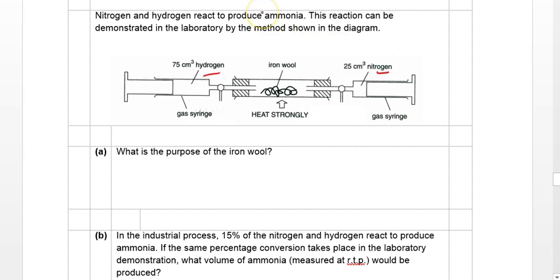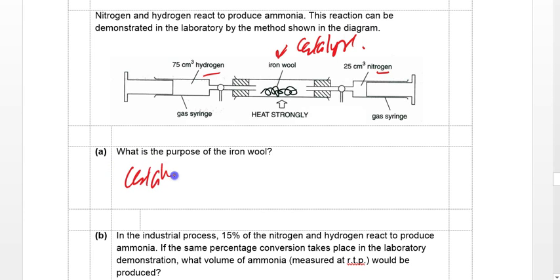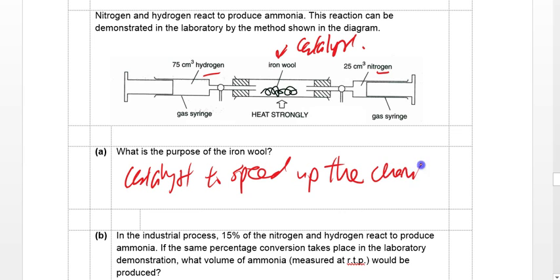Simple checkpoint reaction: H2 + N2 gives ammonia, and iron wool is present here. What is the purpose of the iron wool? It serves as the catalyst — to speed up the chemical reaction.